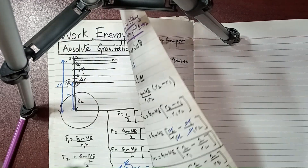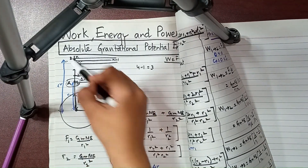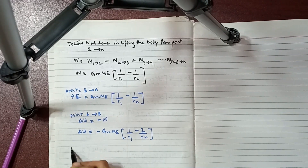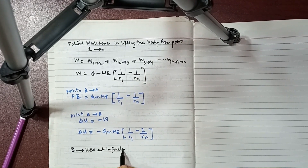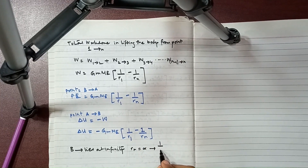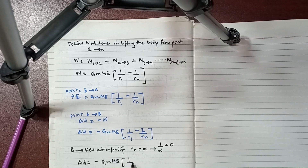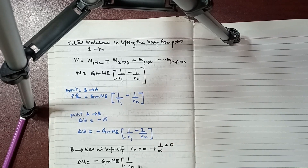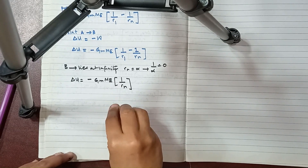Now if we assume that point B is so far that it lies at infinity — so point B, which is basically n, lies at infinity — then rₙ equals infinity, and 1 upon infinity is zero. Putting this in the formula, delta U equals minus GMₑm times (1/rₙ becomes zero), and this is basically the potential energy of the body at point A.